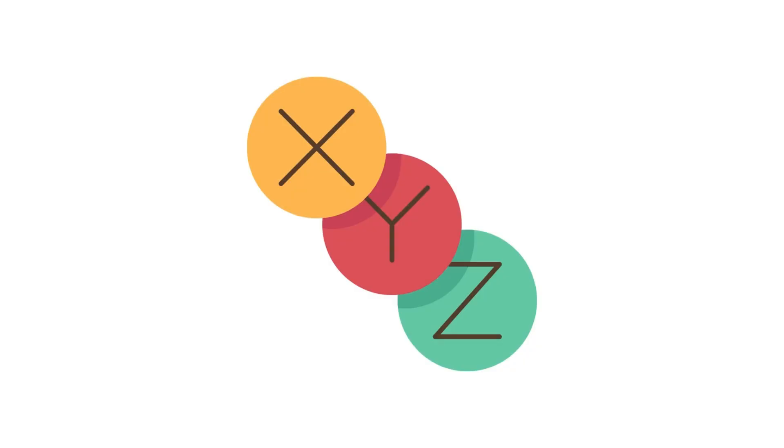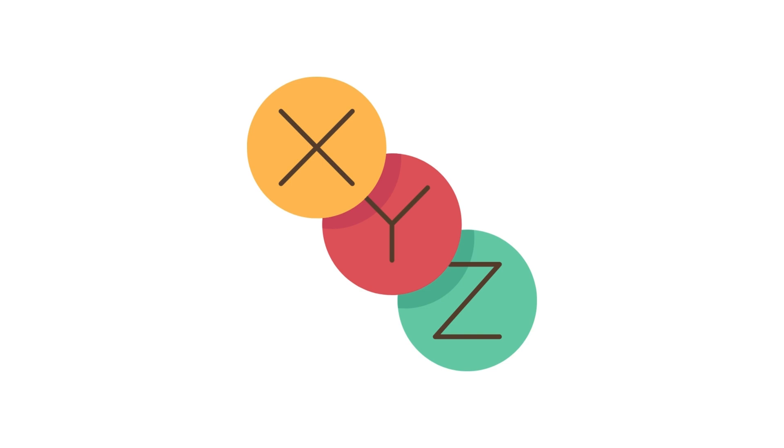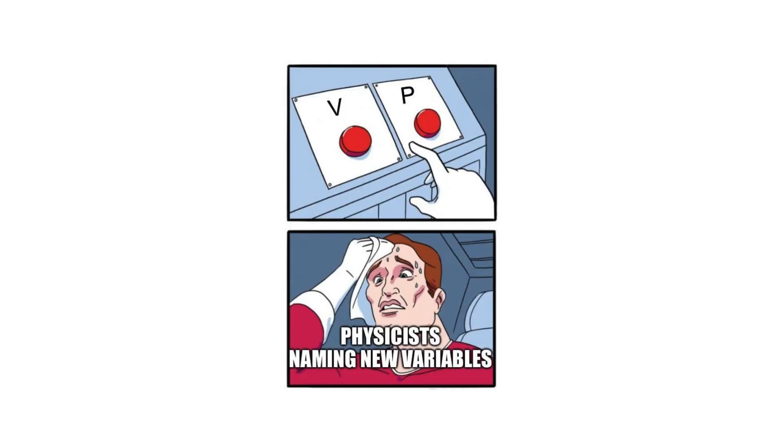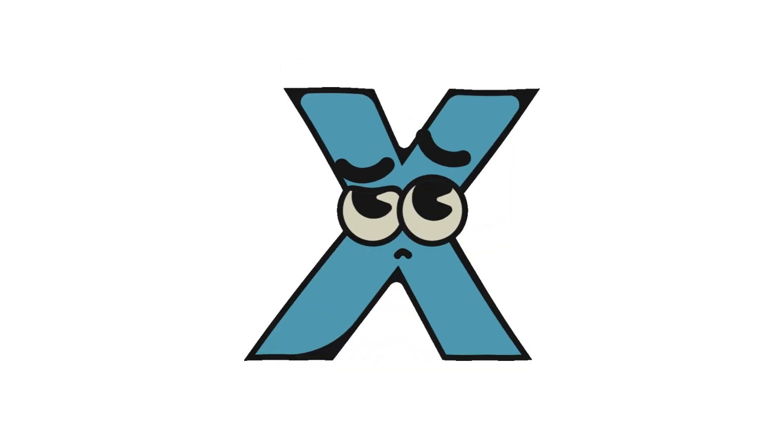Variable. A variable is a symbol that represents some unspecified value. Usually, a variable is just a single letter. For example, the variable x is commonly used.